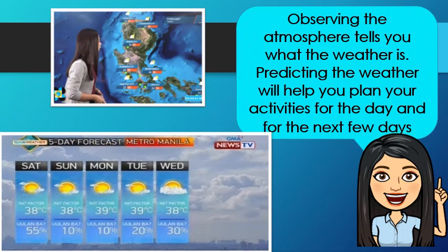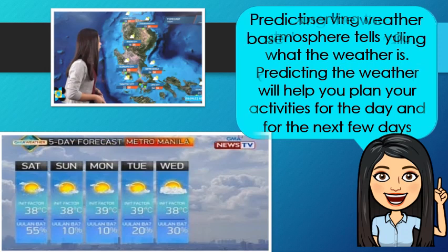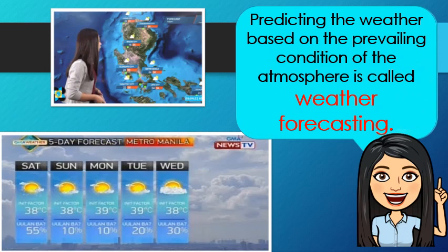Observing the atmosphere tells you what the weather is. Predicting the weather will help you plan your activities for the day and for the next few days. Predicting the weather based on the prevailing condition of the atmosphere is called weather forecasting. When you predict future weather conditions, you are making a weather forecast.